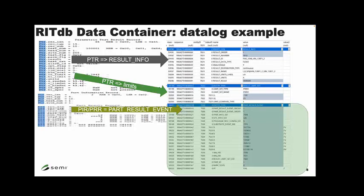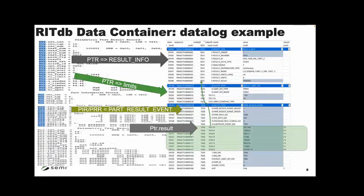This multi-binning capability came out of AMD's presentation on multi-binning. RITDB listens to papers and identifies things it needs to handle. The PTR result pulls out test information and limits into two different entity types, and then the result itself goes within the part result event. Attributes are labeled 'R' — short, because there are many of them — to reduce impact on SQLite file size. The index ID points back to the part result event, giving test name and condition information, along with the measured result.